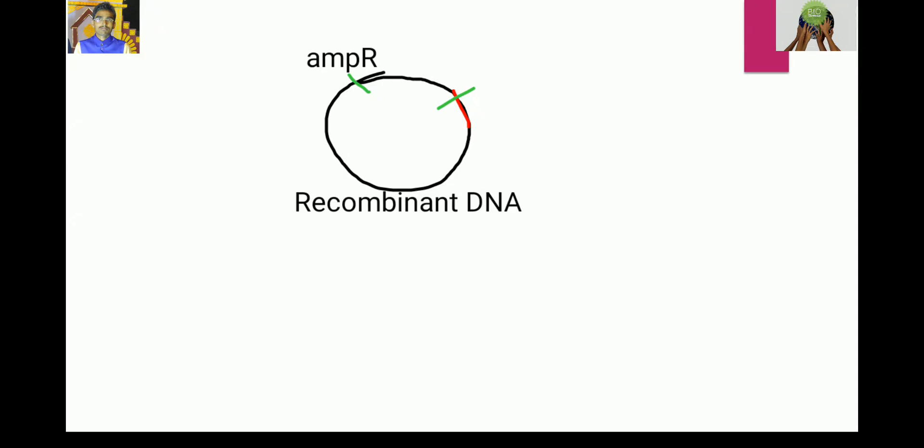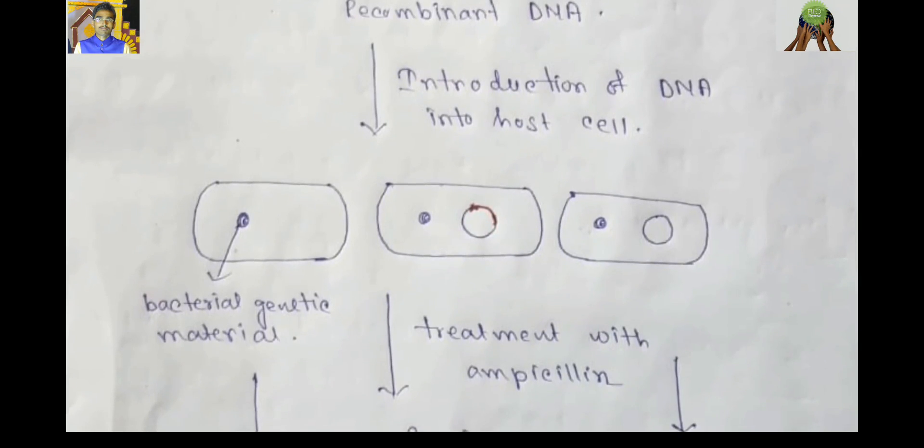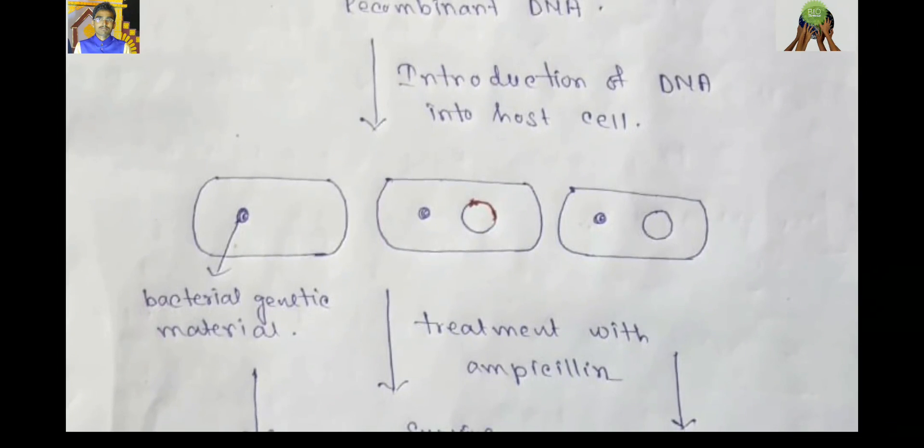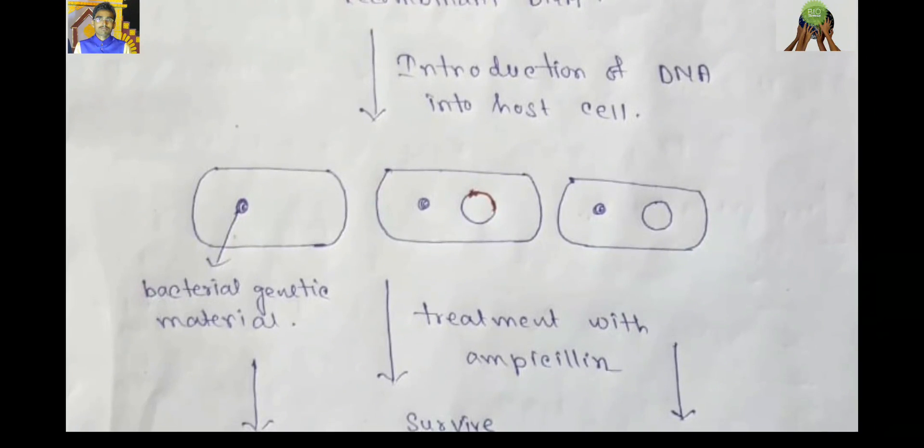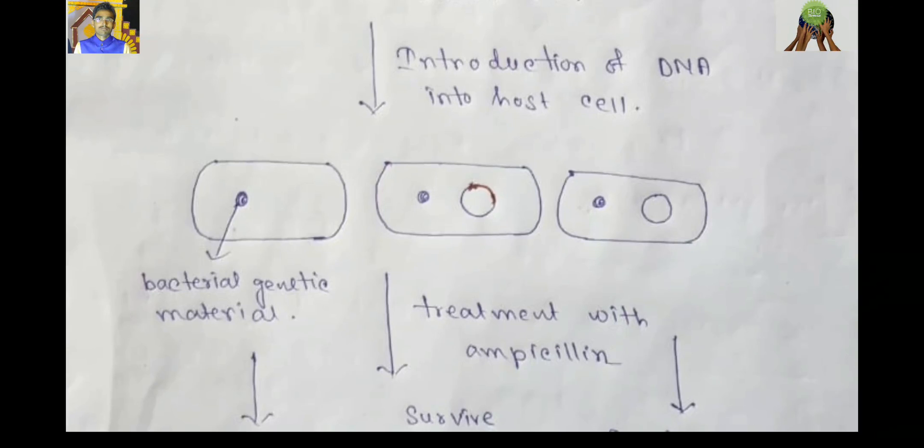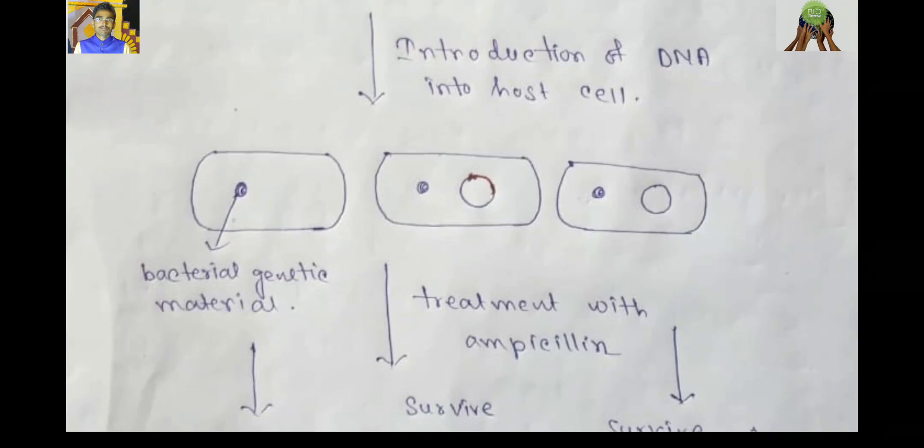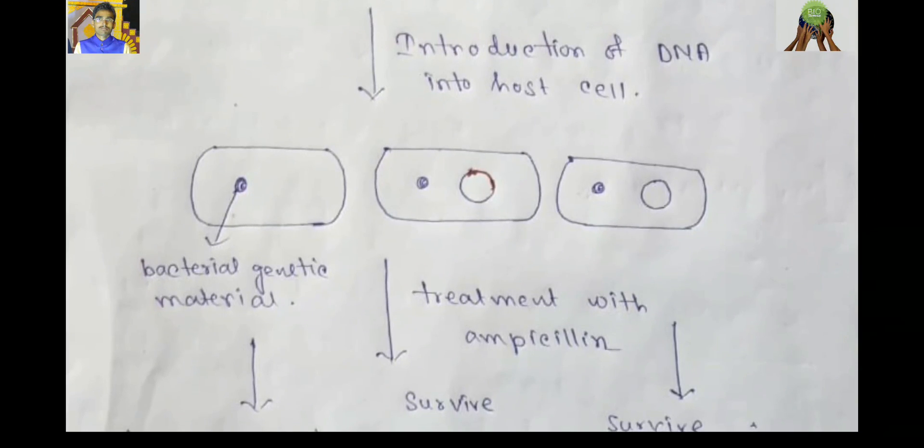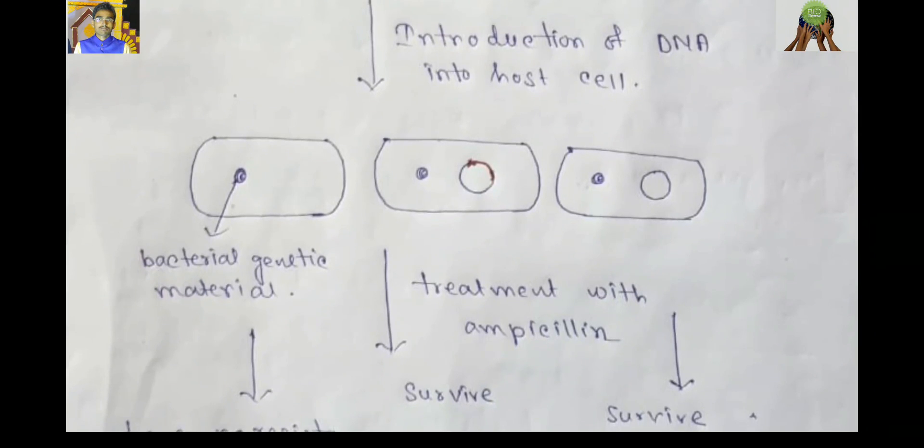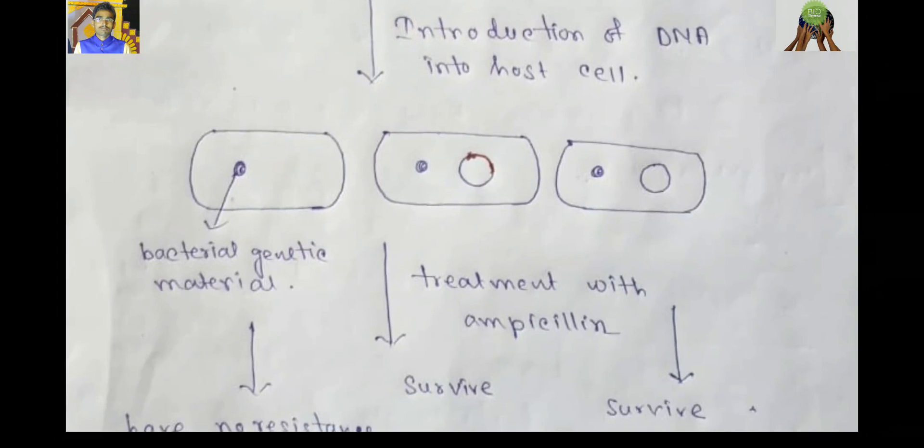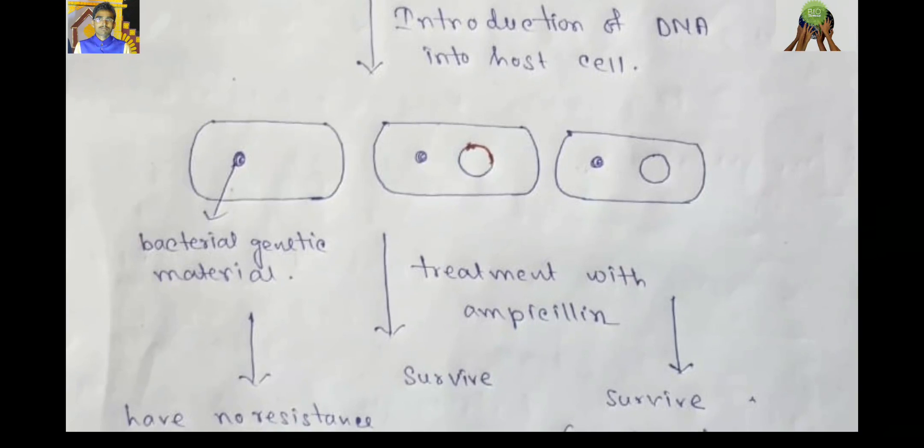So we need a host cell where recombinant DNA is inserted. But when we transfer the RDT to host cell, it is not so easy because all DNA in a sample are not recombinant.